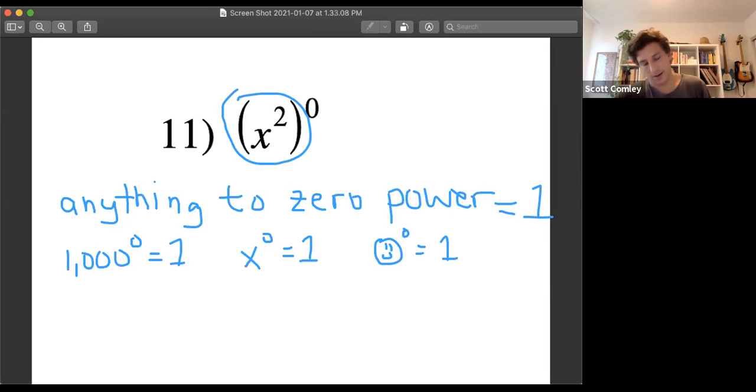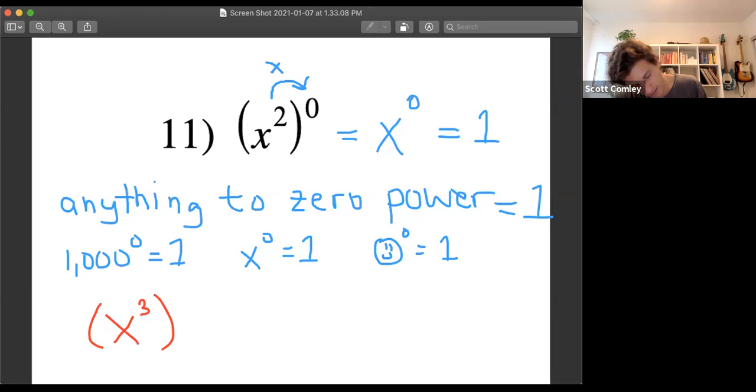Now, this is anything, even if it's x squared to the zero power. If it's a power to a power, you actually multiply that. So that's x to the two times zero, which is x to the zero, which is one. Same thing applies. Like x to the third to the sixth, it's a power to a power. So you're going to multiply. That's going to be x to the 18th power.